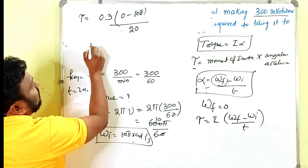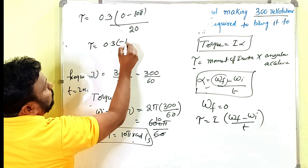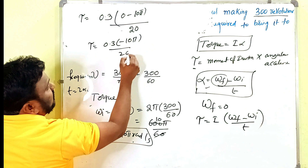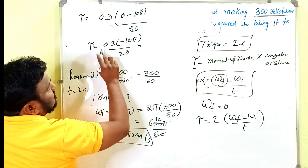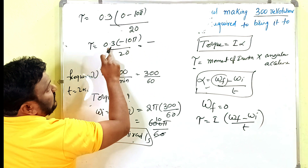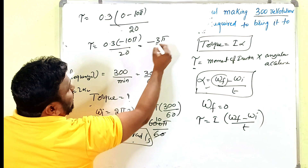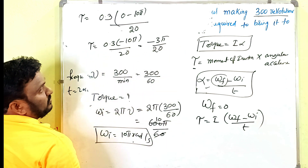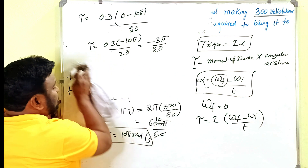So τ = 0.3 × (−10π) / 20 = −3π / 20. Simplifying, we get −3π/20.